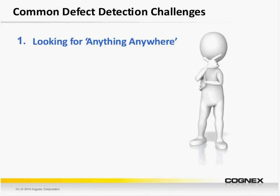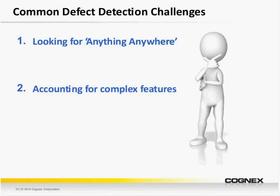This is quite challenging. Rather than looking for a specific feature at a specific location where we can place a tool, oftentimes we're looking for unexpected defects anywhere. Second, we need to account for complex features — whether we're looking to ignore text or logos on a label or on the part itself, or if we need to account for nonlinear variation in lighting.